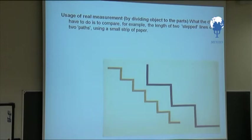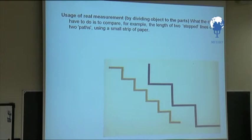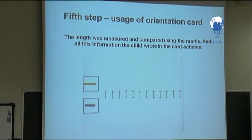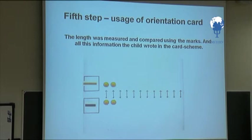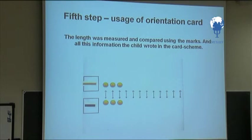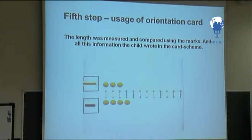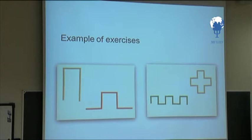Usage of real measurement by dividing the object into parts. In this example, what the child has to do is to compare, for example, two slanted lines or two paths using a small strip of paper. After this, the child can use an orientation card to compare which is larger. The length was measured and compared using marks, and the child wrote the result in the card scheme — an example of these exercises.